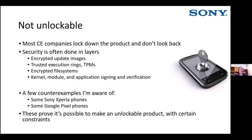At the opposite end of the spectrum, most companies lock down their product and don't look back. The security for this is often done in multiple layers: encryption for update images transferred over the air, trusted execution rings and trusted platform modules holding secret keys, encrypted file systems, and kernel module and application signing so everything is verified before it starts. These products are really locked down hard because certain sectors of consumers have shown themselves to be pretty agile at breaking in.